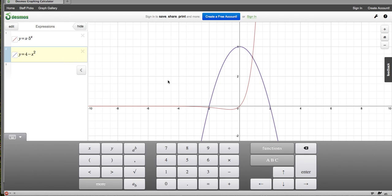So now I have these two equations graphed together, and I want to look for when x times 5 to the x equals 4 minus x squared, and that's going to happen at intersection points.